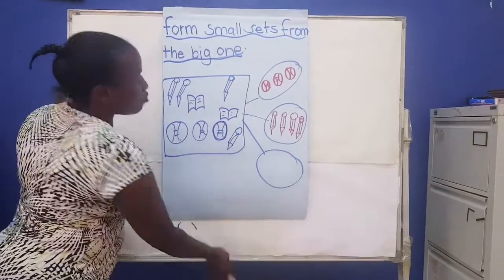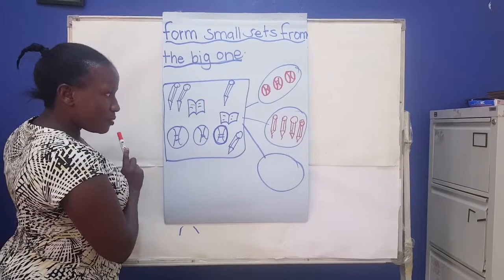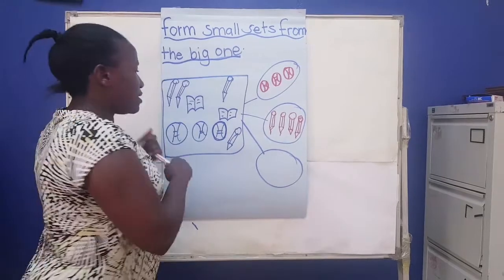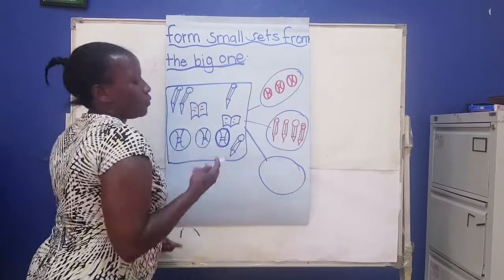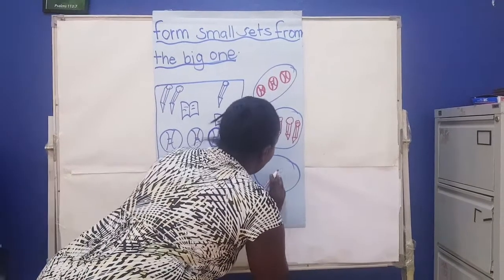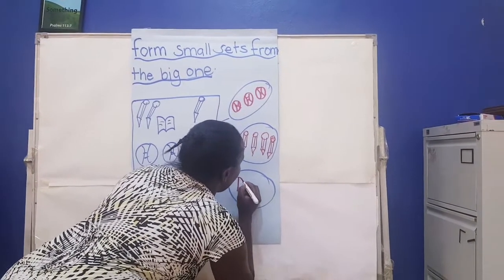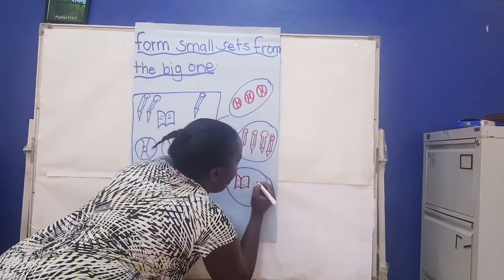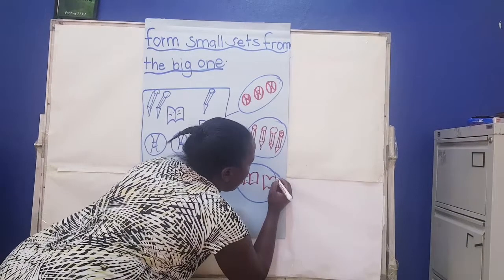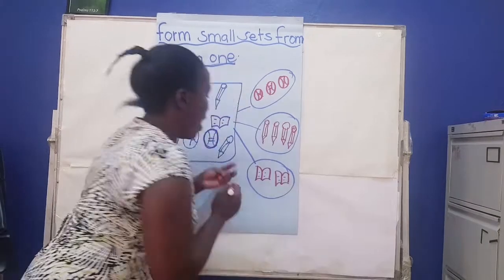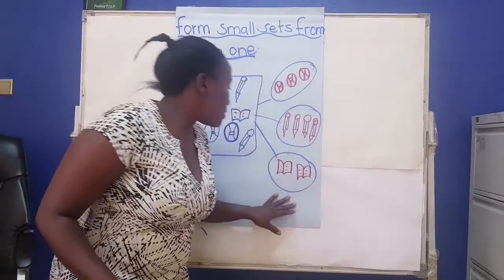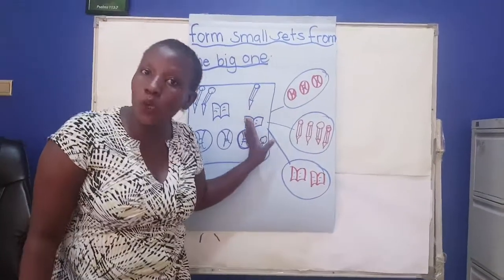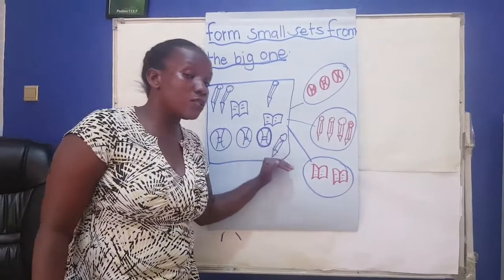Now we are remaining with one set. Which set? Is it for pencils? No. Balls? No. A set of books. Let us count the books: one, two — a set of two books. One, two — a set of two books. This is how we form small sets from the big one.